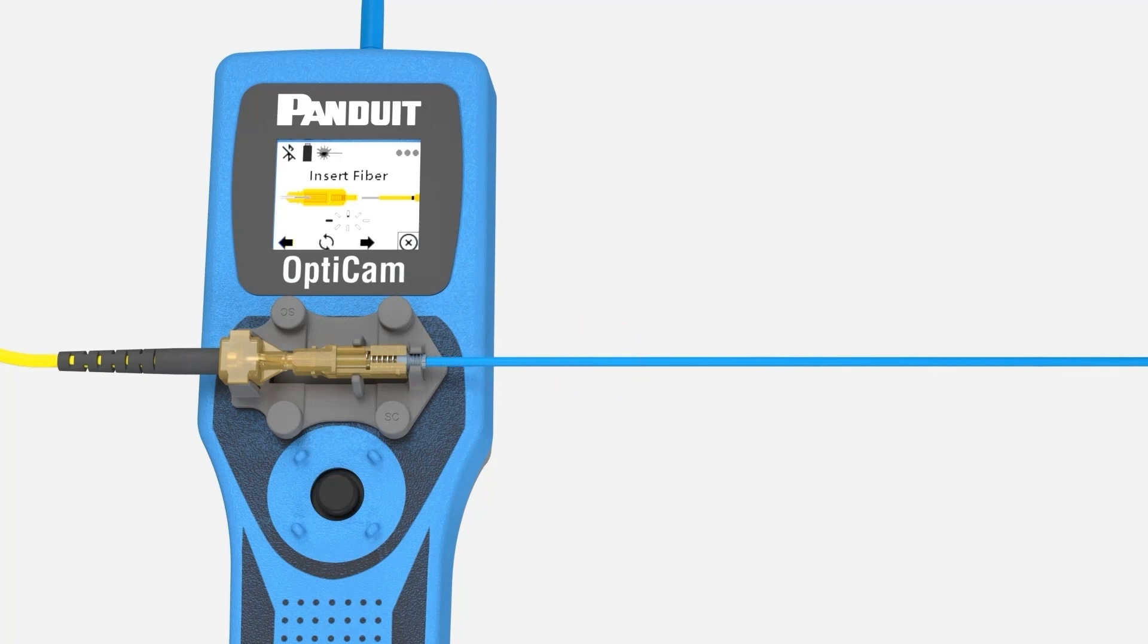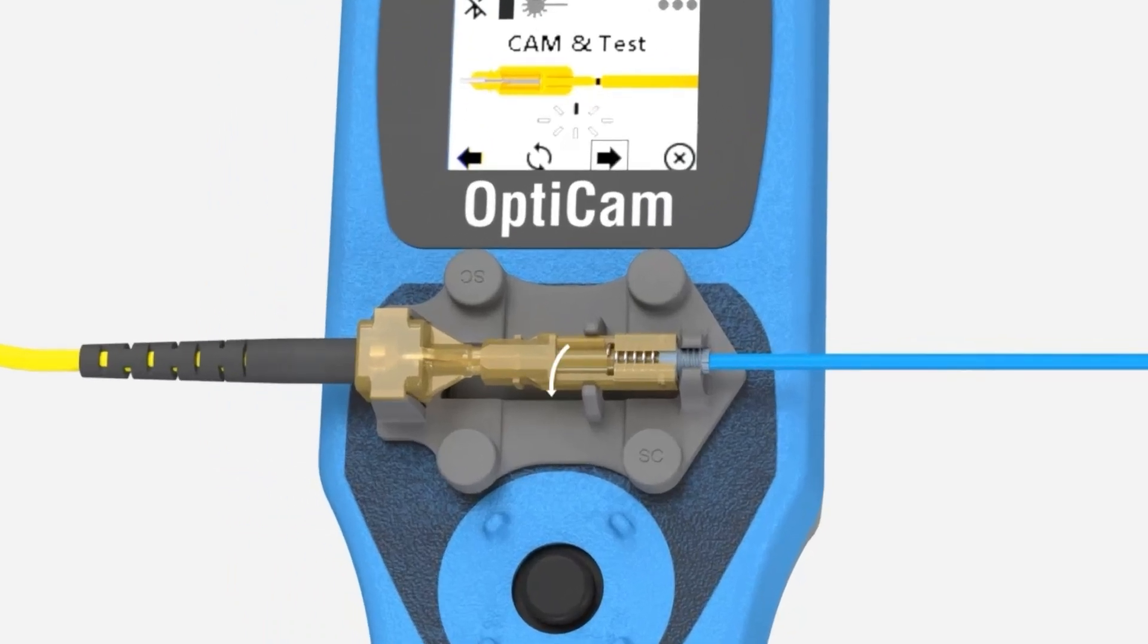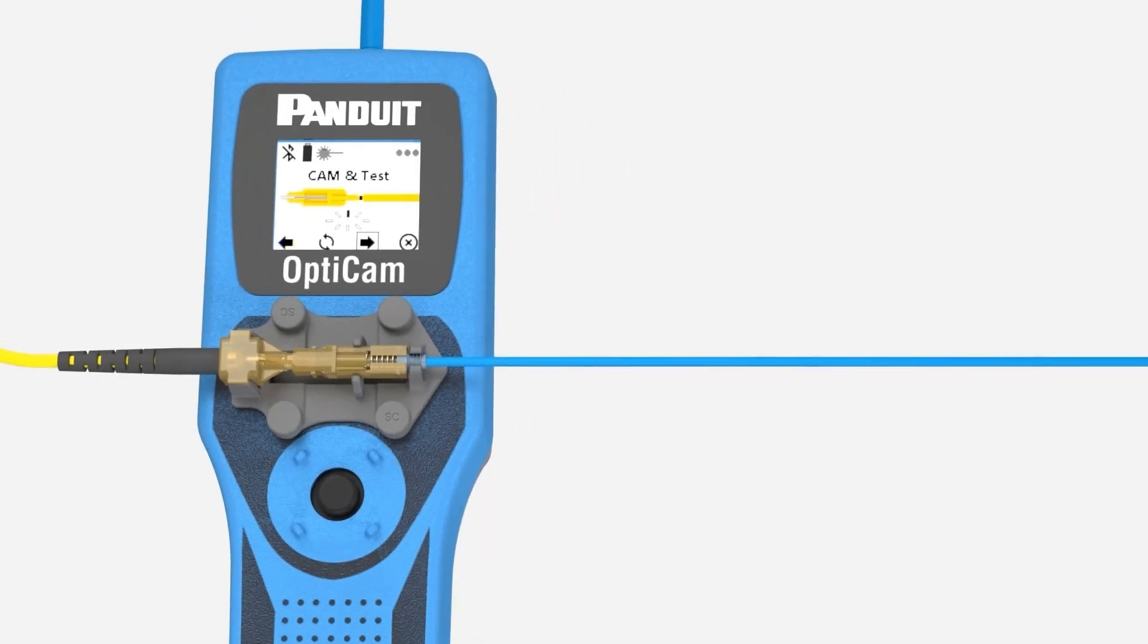The insertion mark on the buffer should line up with the end of the connector, and the screen should switch to a cam and test message. Maintain forward pressure on the fiber as you cam the connector by rotating the cam fin in the center of the connector towards you for a right-handed setup or away from you for a left-handed setup. Once the connector is fully cammed, click the main navigation button on the OptiCam tool to perform the insertion loss calculation.